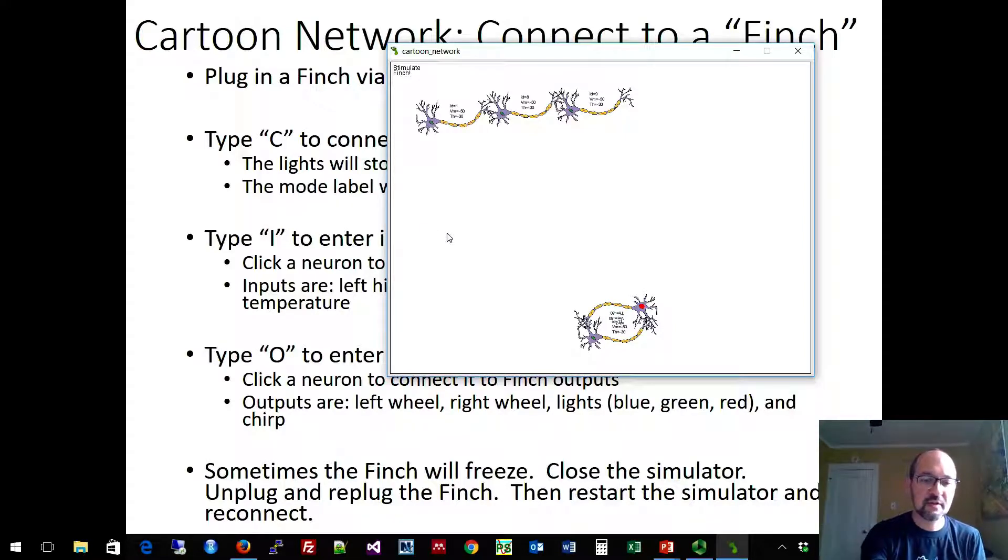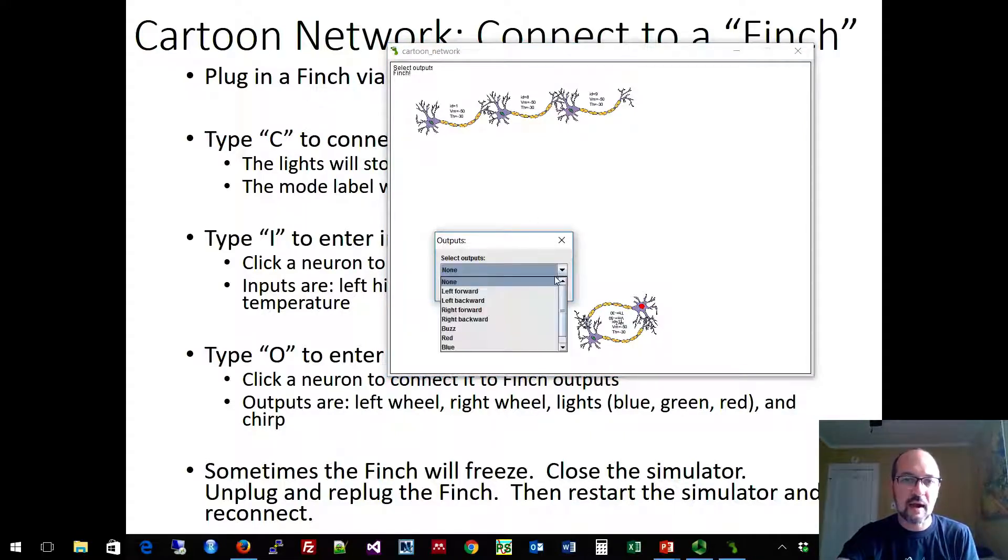So, for example, let's click O for outputs. We're going to click on a neuron. And the outputs that we have are to make the left wheel go forward, the left wheel go backwards, the right wheel go forward, the right wheel go backwards, to make a buzzing noise, to turn on its red nose light, its blue nose light, or its green nose light. Let's do red.